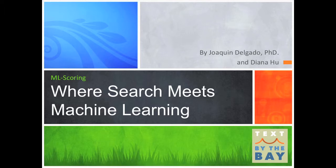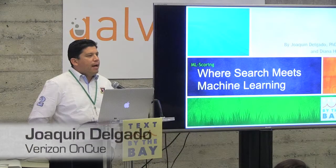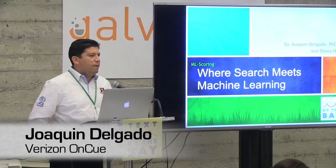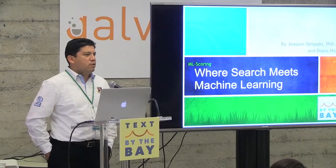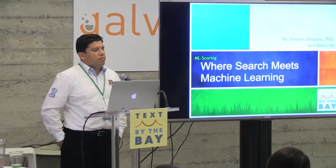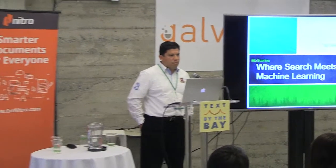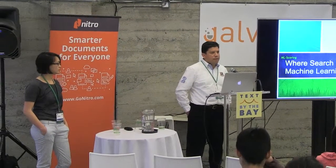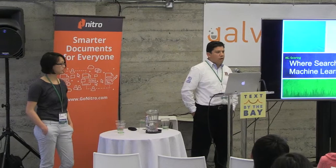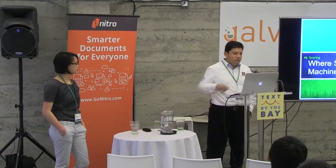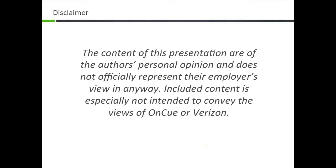I think we're ready to start. Let me first introduce myself and Diana, the speaker. My name is Joaquin Delgado. I'm the director of engineering at OnCue Verizon. OnCue is an internet and mobile TV product that we will be launching soon. I lead the group that does advertising over the internet for internet TV as well as recommender systems. I'm going to talk today about some of the learnings we've had with respect to the intersection of machine learning and search, and commonalities we've tried to address with an open source proof of concept that we're launching.